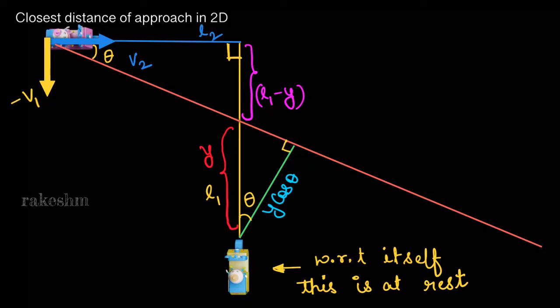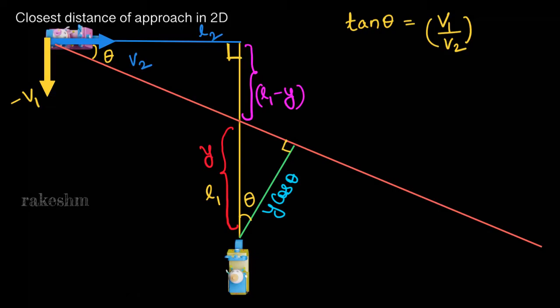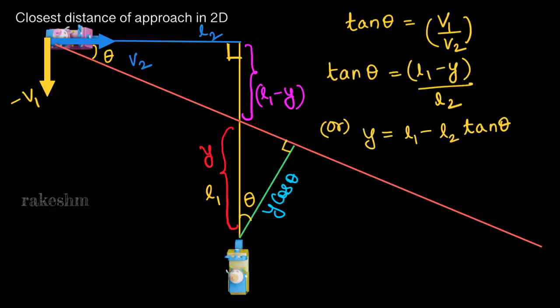What we need to find is y·cos theta. The velocity vector v2 is in one direction and v1 is in the other direction, and the resultant relative velocity vector gives the direction of motion. From the velocity triangle, tan theta equals v1 divided by v2. In the geometric triangle, we can also write tan theta equals l1 minus y divided by l2.